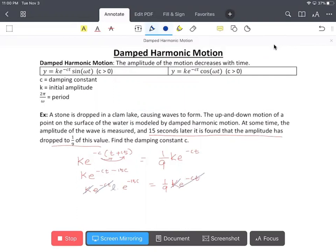Now we can take ln on both sides because we're solving for c and we want the c to come down. Then that will be equal to, don't forget ln e is equal to 1, so we have negative 15c is equal to ln one over nine.